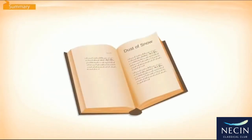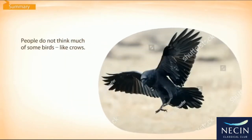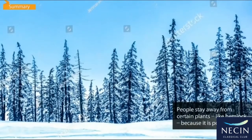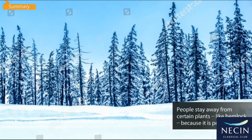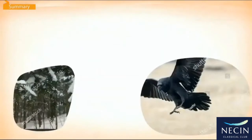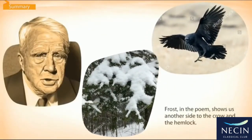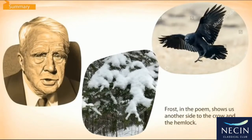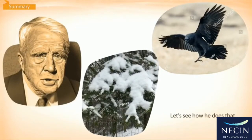Let's see what happens in Dust of Snow by Robert Frost. People do not think much of some birds, like crows. People stay away from certain plants, like hemlock, because it is poisonous. But not everyone. Frost in the poem shows us another side to the crow and the hemlock. Let's see how he does that.